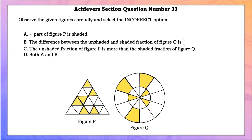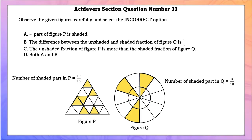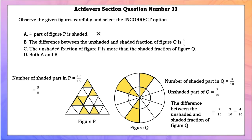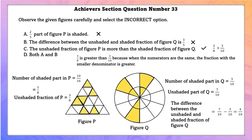Achieve section question number 33. Rearranging figure Q, shaded parts in P = 10/16 and in Q = 3/10. Statement A: '2/5 of figure P is shaded' — False. Statement B: 'The difference between unshaded and shaded fraction of Q is 3/5' — False; unshaded part of Q is 7/10, difference is 4/10, not 3/5. Statement C: 'The unshaded fraction of P is more than the shaded fraction of Q' — True, since 3/8 > 3/10 (same numerator, smaller denominator is greater). Option D is correct.